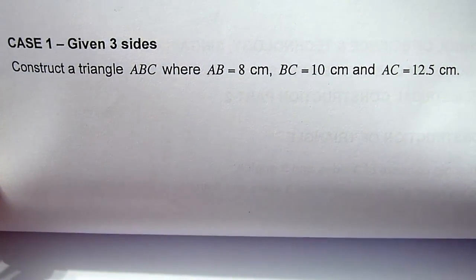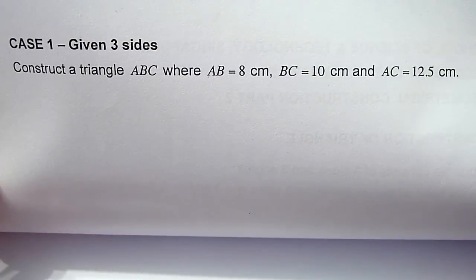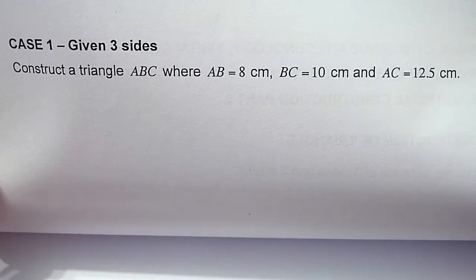To construct a triangle given three sides, where AB is equal to 8 cm, BC equal to 10 cm, and AC equal to 12.5 cm,